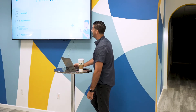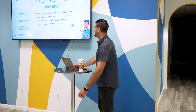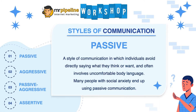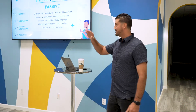We'll talk about the first one and I want to try to get everyone involved as much as we can — make this learning and fun at the same time. The first style of communication, passive, is defined as a style in which individuals avoid directly saying what they think or want, and often involves uncomfortable body language. Many people with social anxiety end up using passive communication.